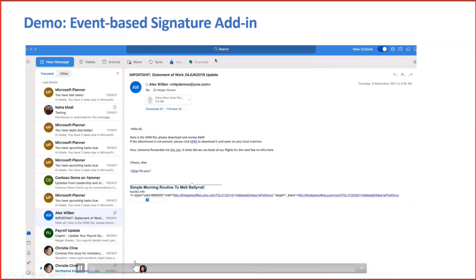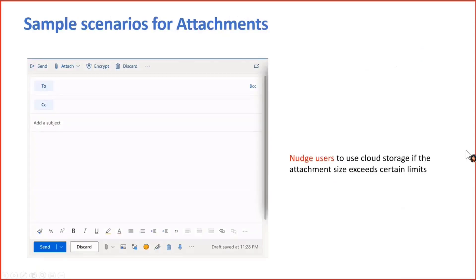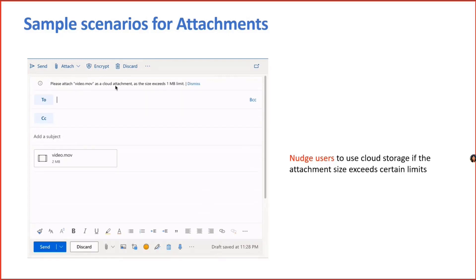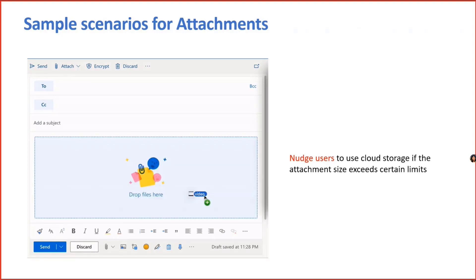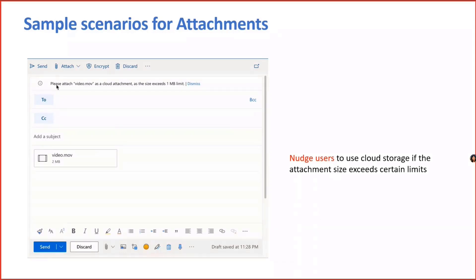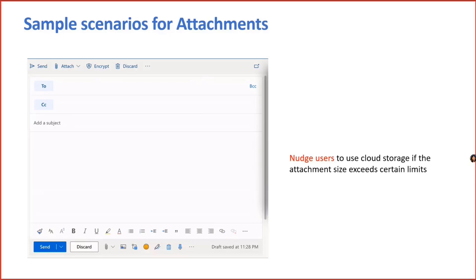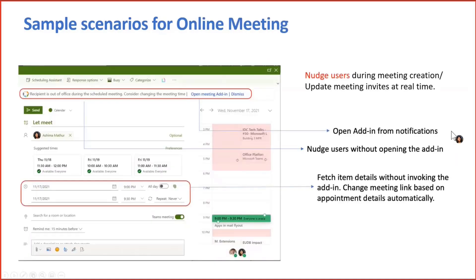There are also some other scenarios to explore. For example, attachments: add-ins could nudge users to use cloud storage if attachment sizes exceed certain limits. This can run OnCompose, check for attachments, auto-launch the add-in, and nudge the user — enabling smart Compose scenarios.